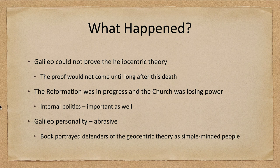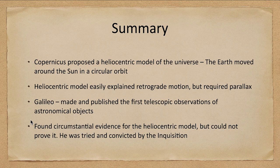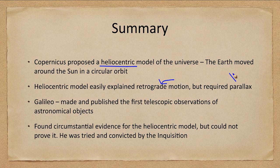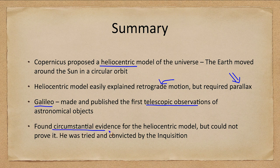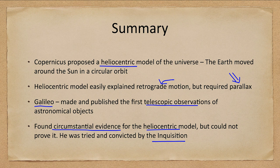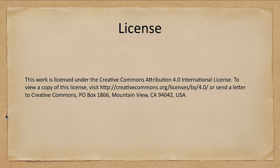In summary, Copernicus gave us a heliocentric model of the universe with the Earth actually moving. It explains retrograde motion simply, but required parallax, and we did not have any measurements of parallax yet. Galileo made and published the first telescopic observations of many astronomical objects and found a lot of circumstantial evidence to support the heliocentric model, but could not prove it. We also looked at how he was tried and convicted by the Inquisition. That concludes this lecture on the origin of modern astronomy — we'll be back again next time for another topic. Have a great day everyone, and I will see you in class.